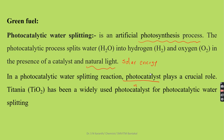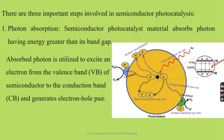The photocatalytic water splitting process consists of three important steps involved in semiconductor photocatalysis. When light particles or photons hit on the semiconductor component, the semiconductor photo catalyst material absorbs these photons of light having energy greater than its band gap. The energy of the photon should be more than the energy of the band gap of the photo catalyst — for example, titanium dioxide.